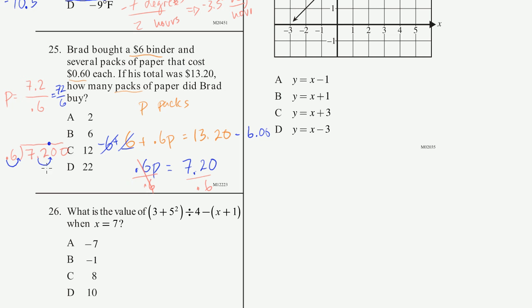So 6 goes into 72. 6 goes into 7 one time. 1 times 6 is 6. And then 7 minus 6 is 1. Bring down the 2. 6 goes into 12 two times. 2 times 6 is 12. You get a 0. So you get exactly 12 times. And if you know your 6 times tables, you knew that. 72 divided by 6 is 12. So p is equal to 12. He bought 12 packs of paper.